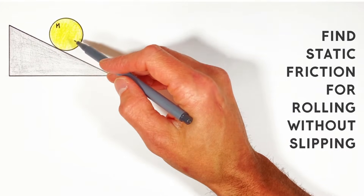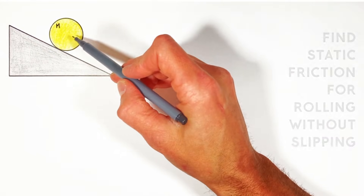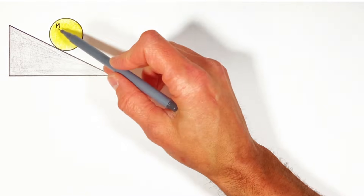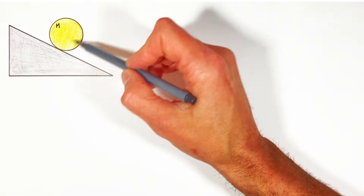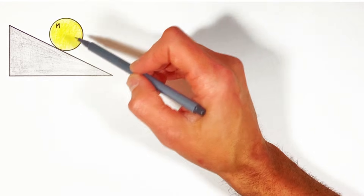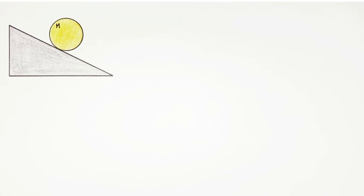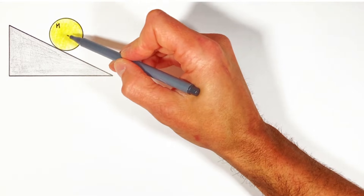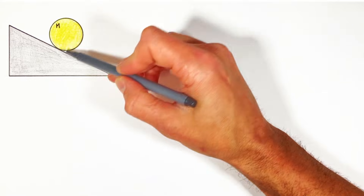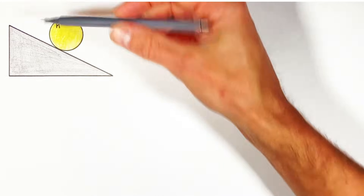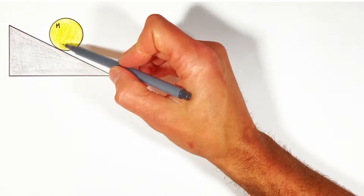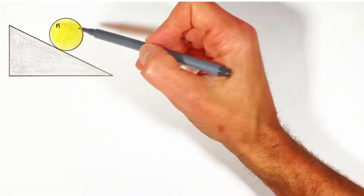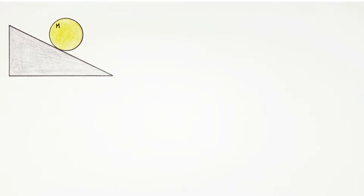Today we're going to solve for the required coefficient of friction between some rolling object and a ramp, such that that object is going to roll without slipping. This rolling object can be a ball, a hoop, or a disc — just so long as it's round, it's going to be able to roll down the hill, and if there's enough friction between the hill and the ball, it's going to roll without slipping.